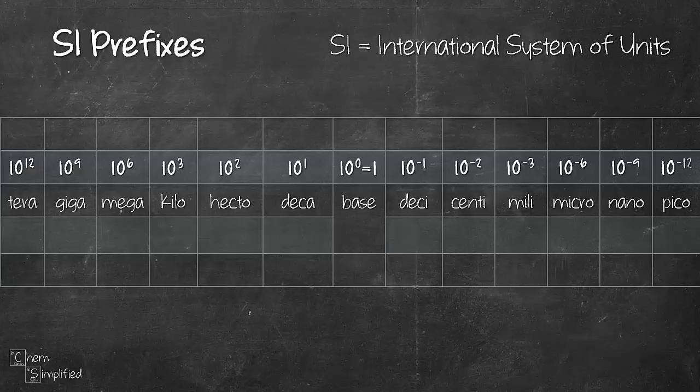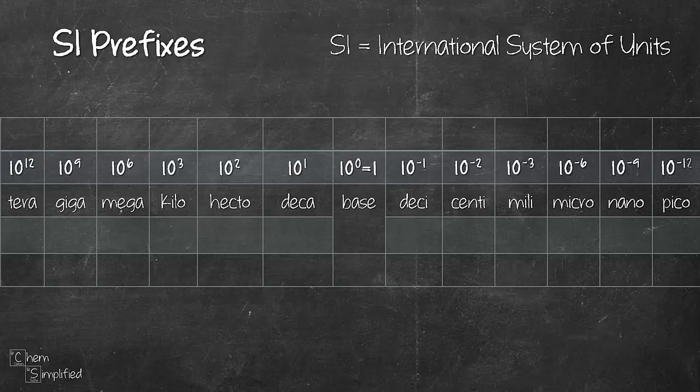Let's get to know some of the common SI prefixes. I've included 12 of them from terra all the way to pico. Depending on your school you might need to memorize them. Terra, giga, mega all the way to pico - those are the names of the prefixes and the numbers are the value for each of the prefixes.